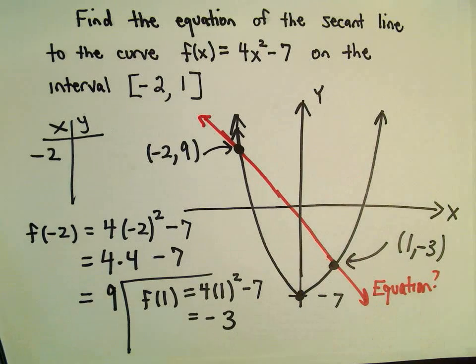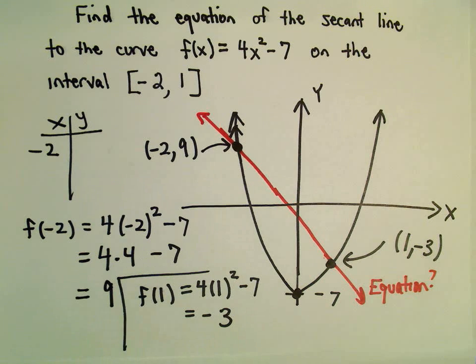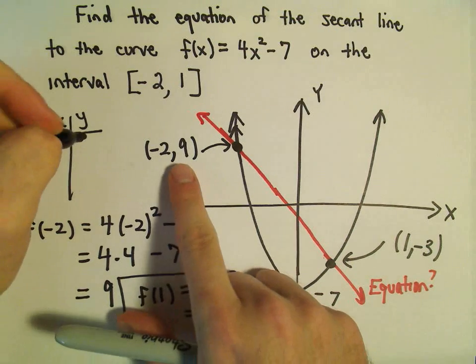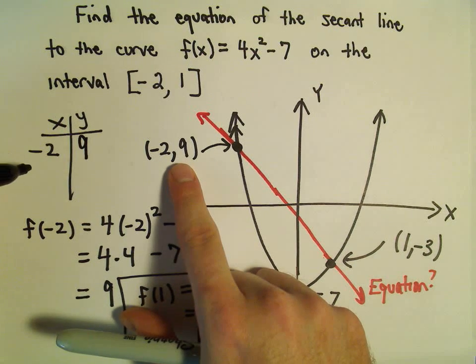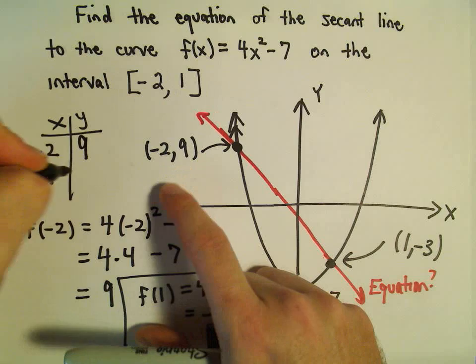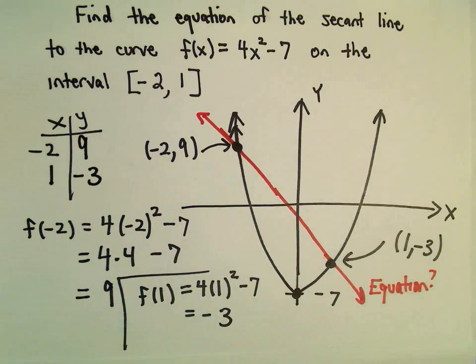You don't have to graph the function to do this problem, but just to try to show you what's going on here. Normally on a problem, I would calculate the points and not worry about too much else. So (-2, 9) we said was one point and we said when you plug 1 in you get out -3.